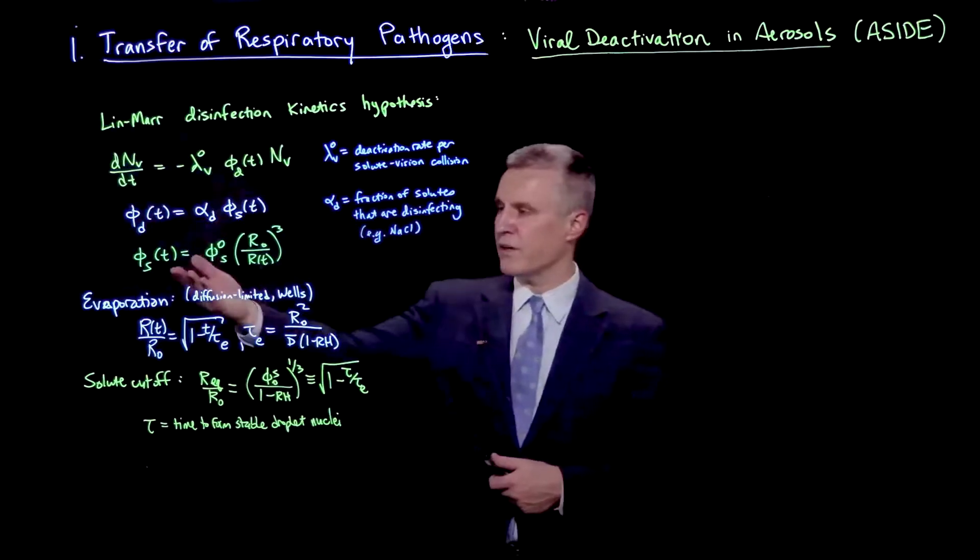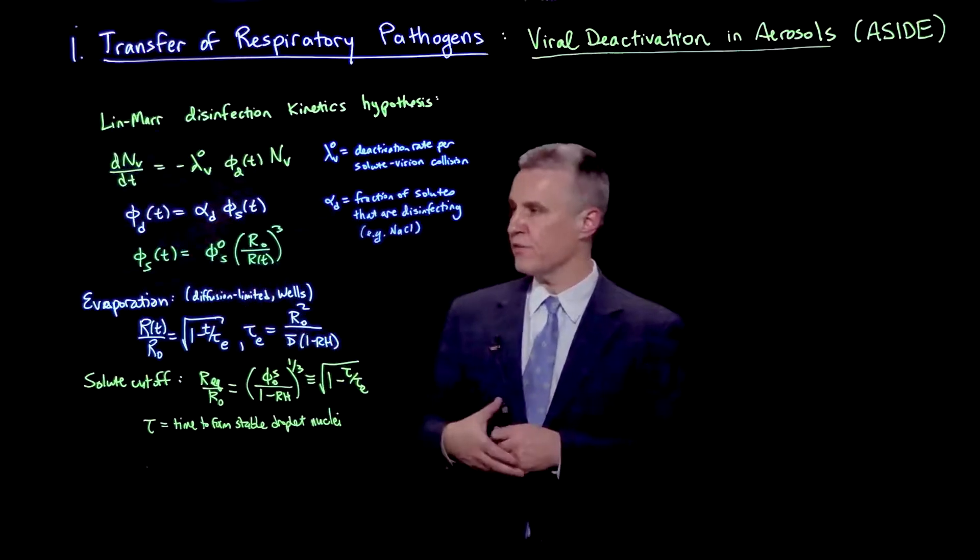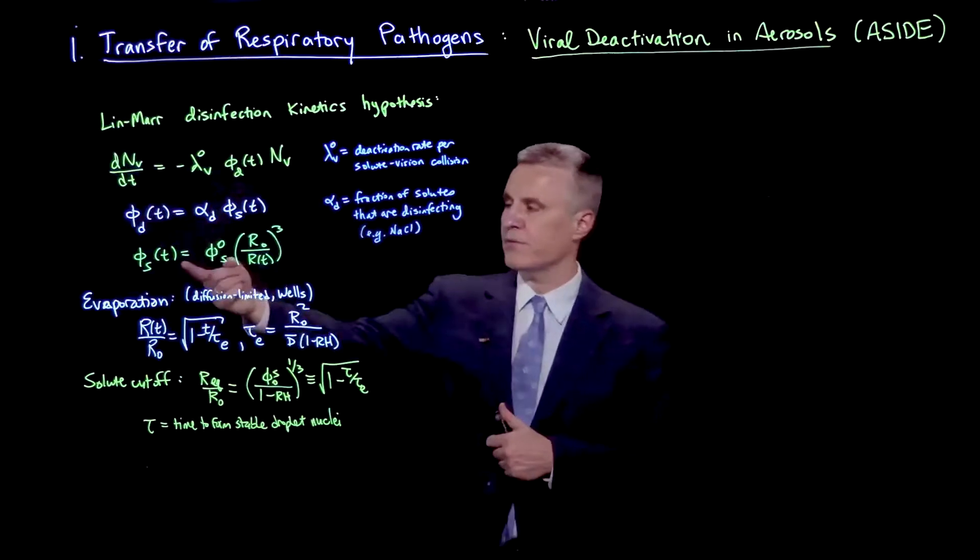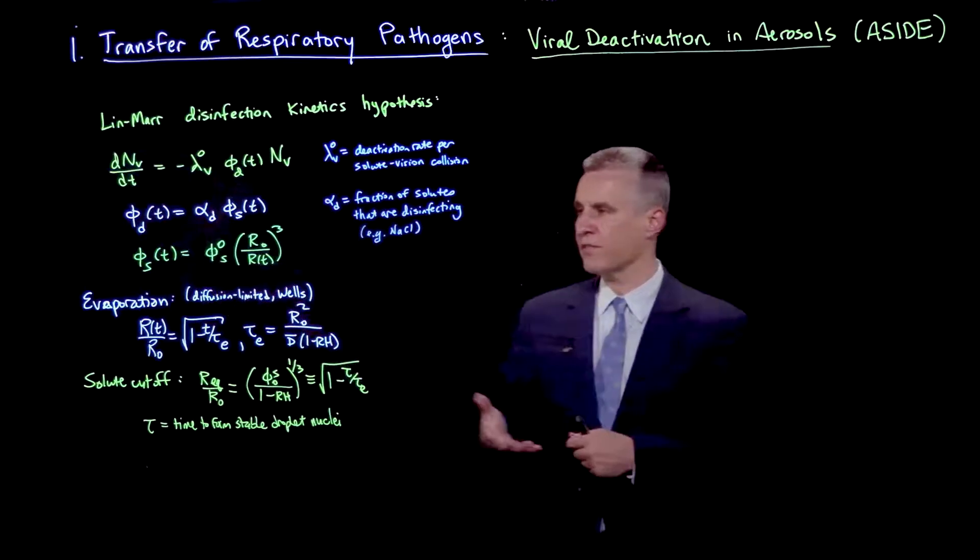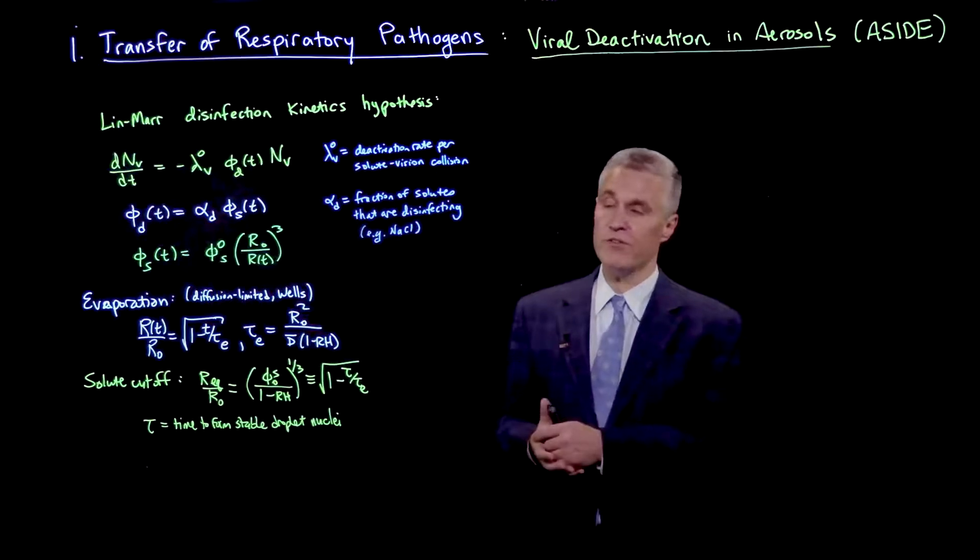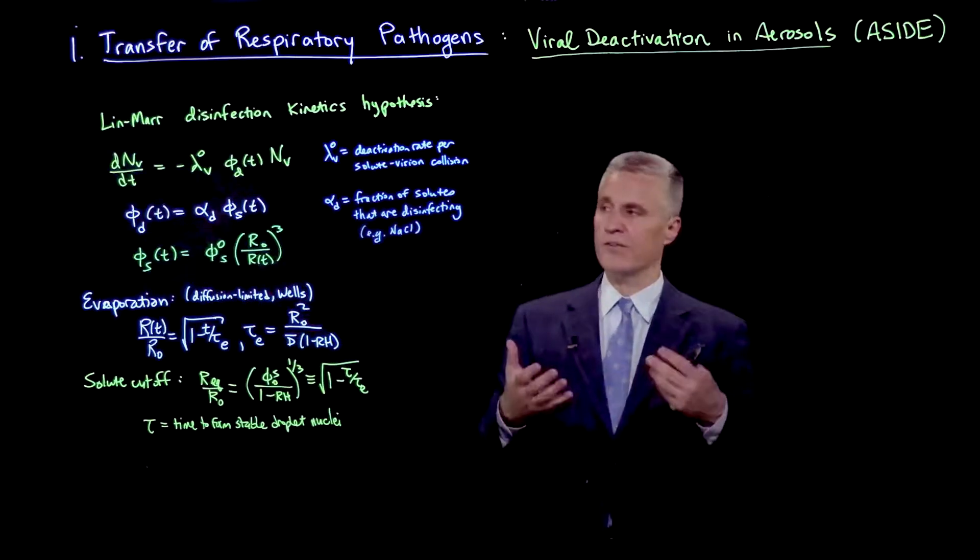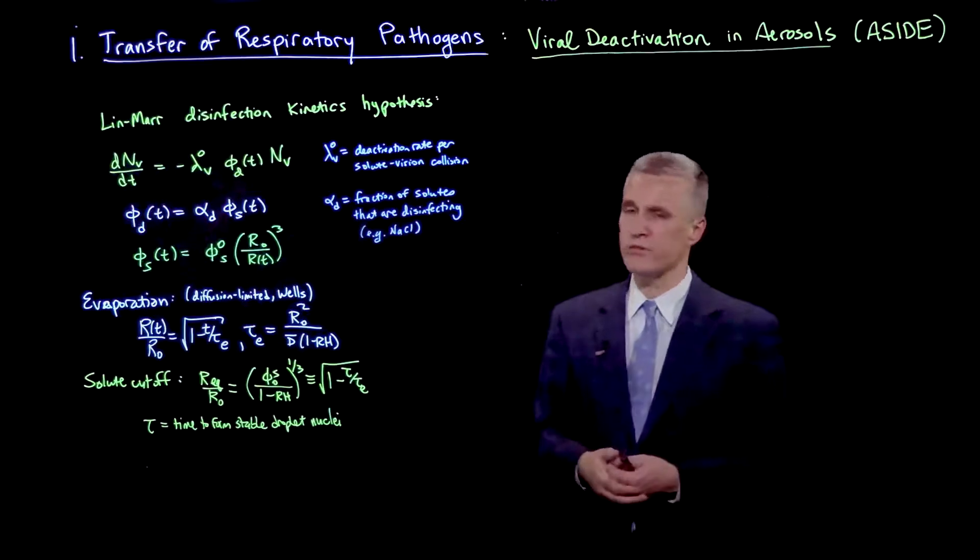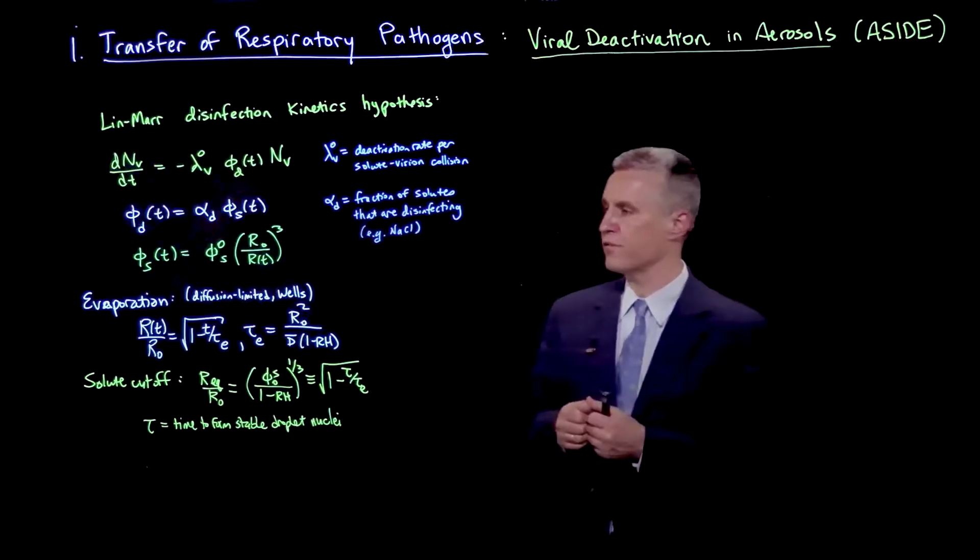As the droplet is shrinking with a radius r of t, then it's simply the volume of phi s that is getting rescaled relative to the initial value phi s 0, as r 0, the initial radius, divided by r of t cubed. That's just simply the changing of the volume.